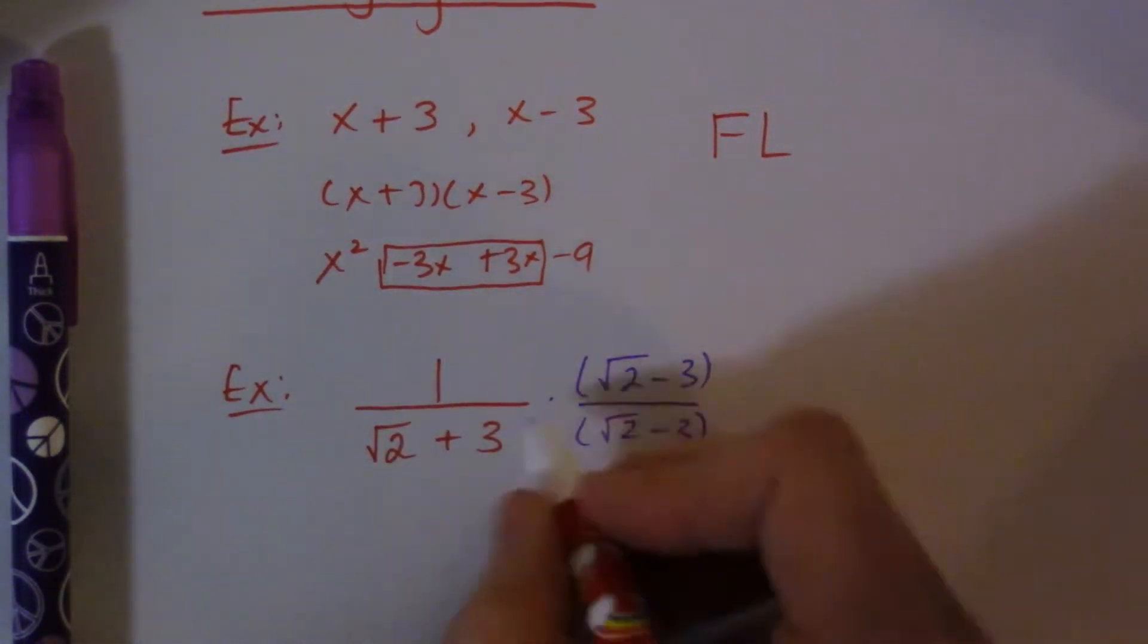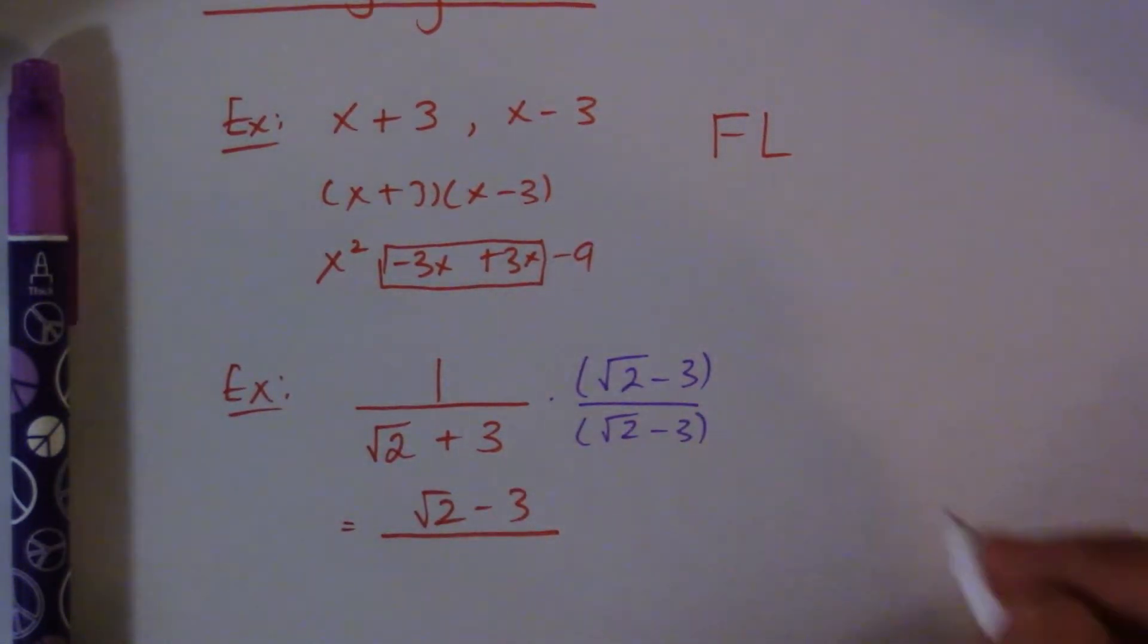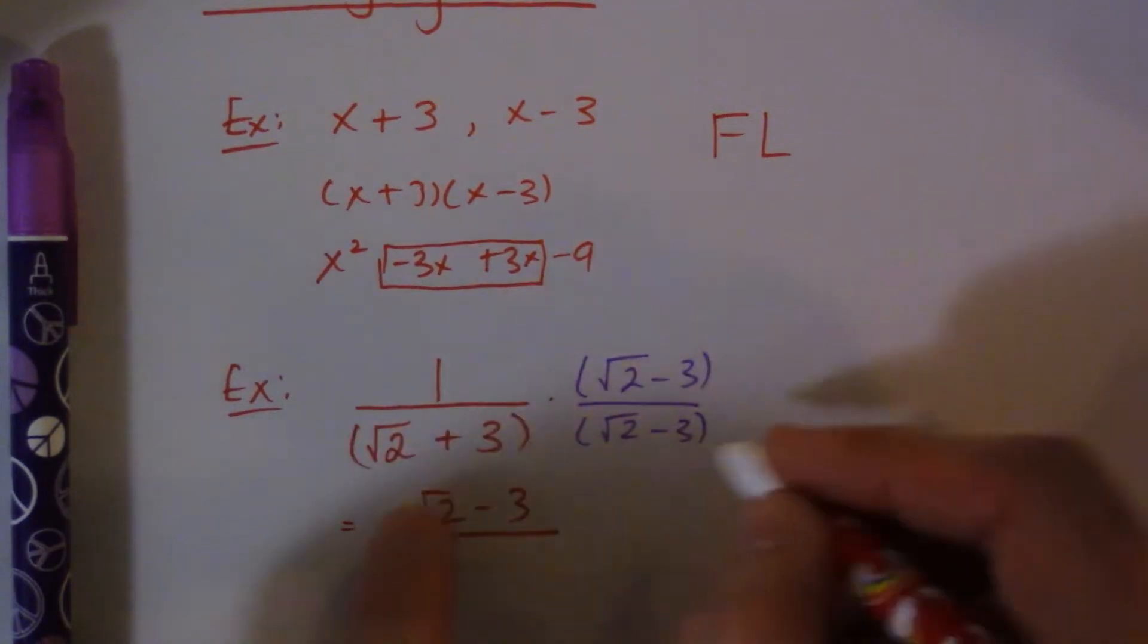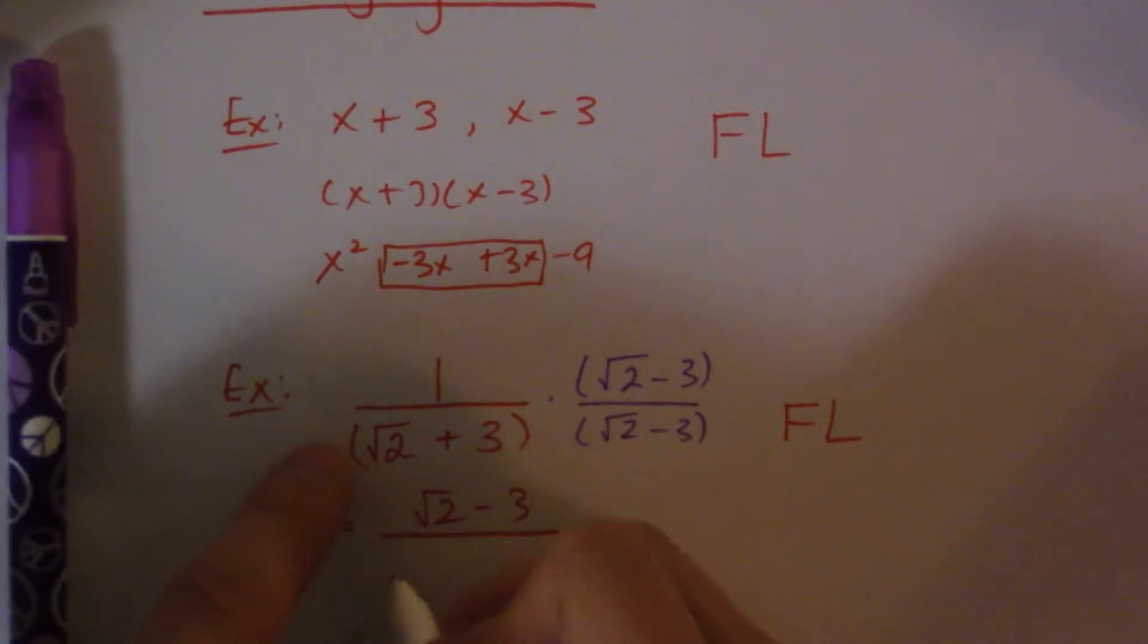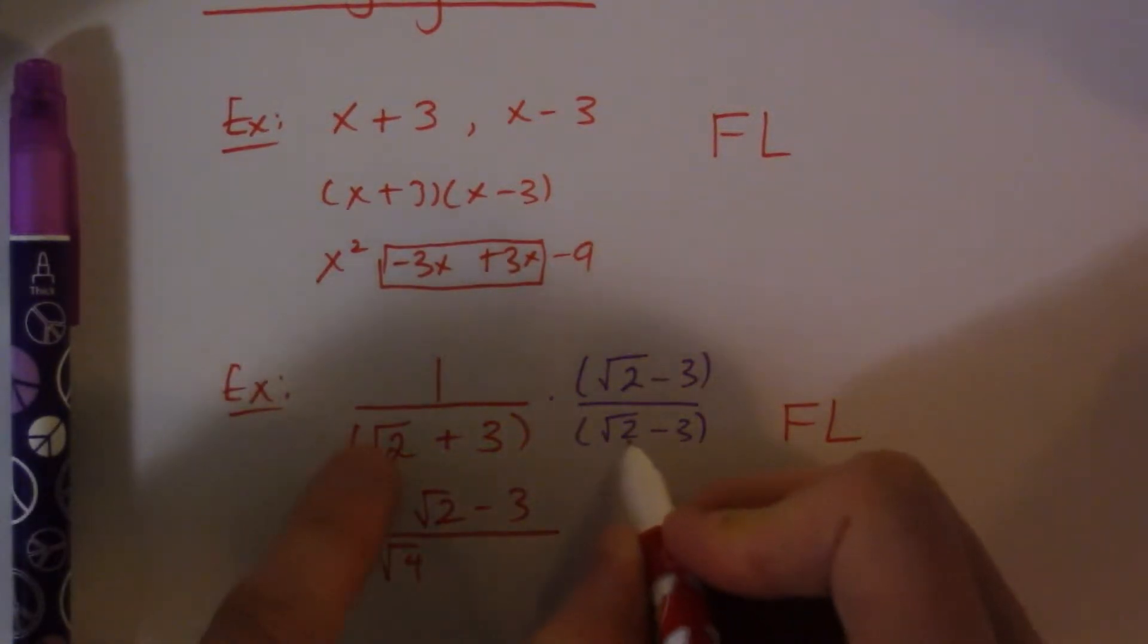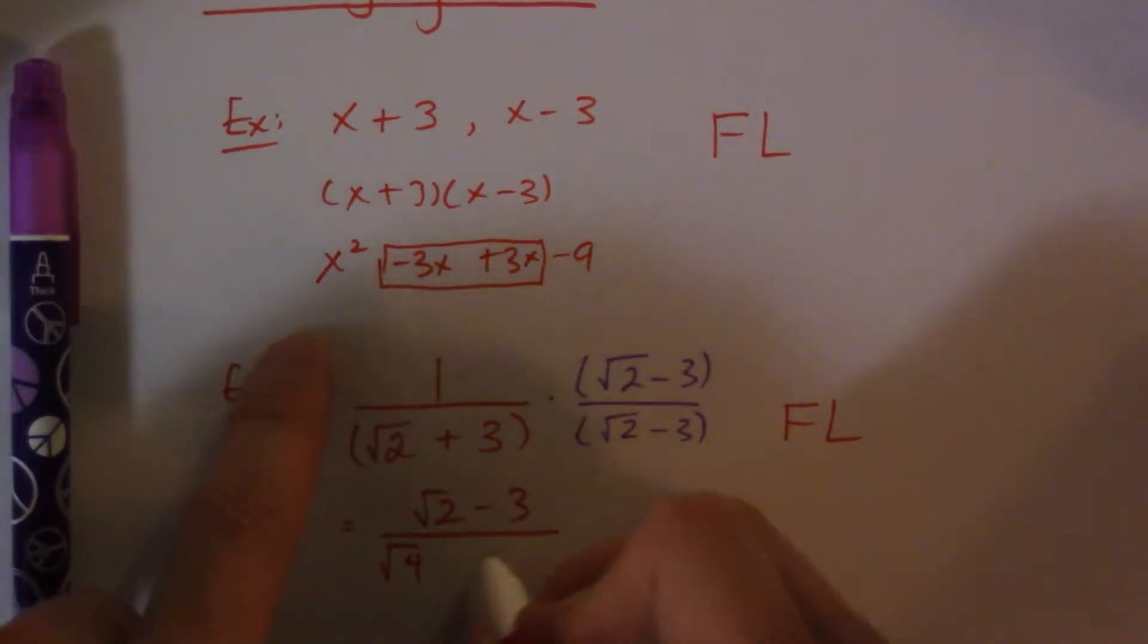So I multiply the top, so really one times that is just root 2 minus root 3. So the root is now in the top, and the thing is, for the bottom, since it's conjugate, we only have to do FLUH. So root 2 times root 2 is root 4. And then root 3 times root 3 is negative 9.